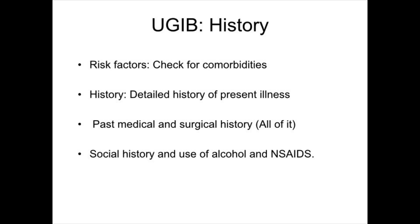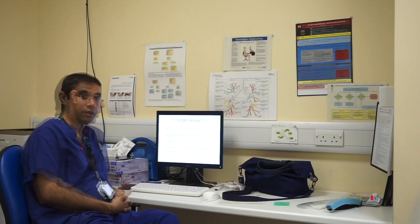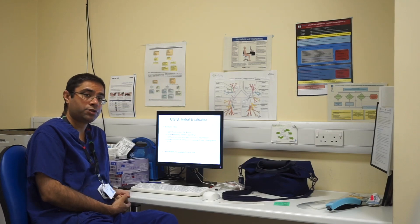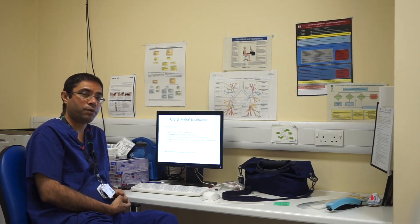Check for co-morbidities, particularly coronary artery disease, hypertension, diabetes, and malignancies. When you initially see a patient or have been asked to see a patient with an upper GI bleed, initial evaluation should include airway, breathing, and circulation.